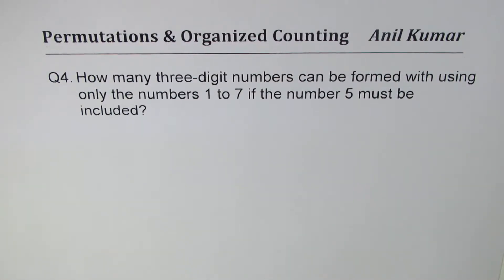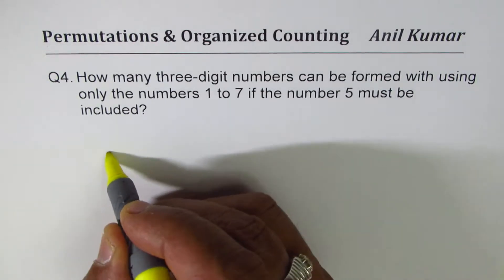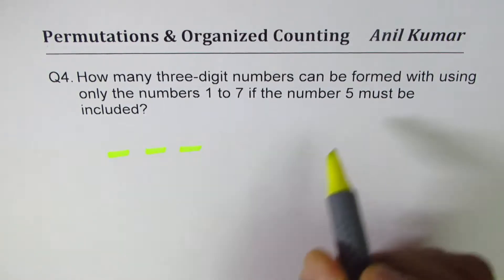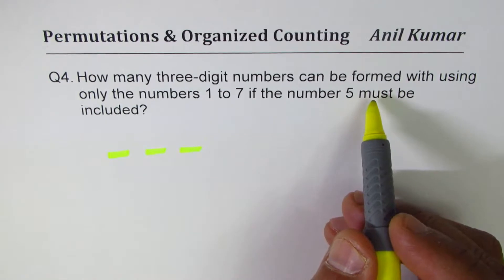Anil Kumar here with a question on permutations and organized counting. Question number four: How many three-digit numbers can be formed using only the numbers 1 to 7 if the number 5 must be included? So we have to make three-digit numbers and 5 must be included.